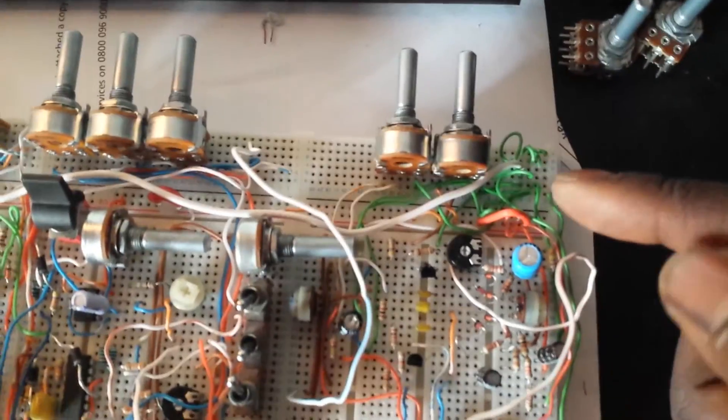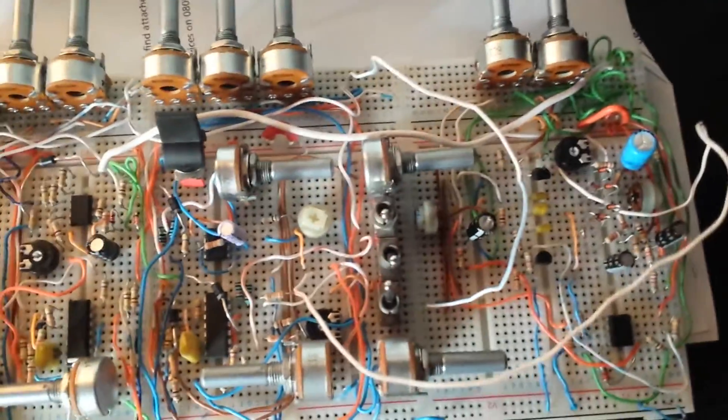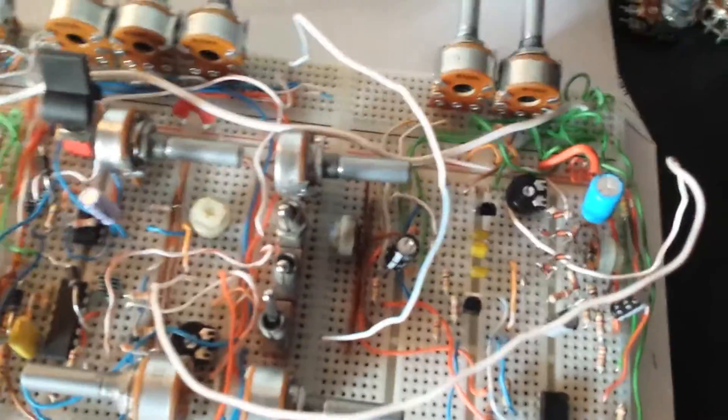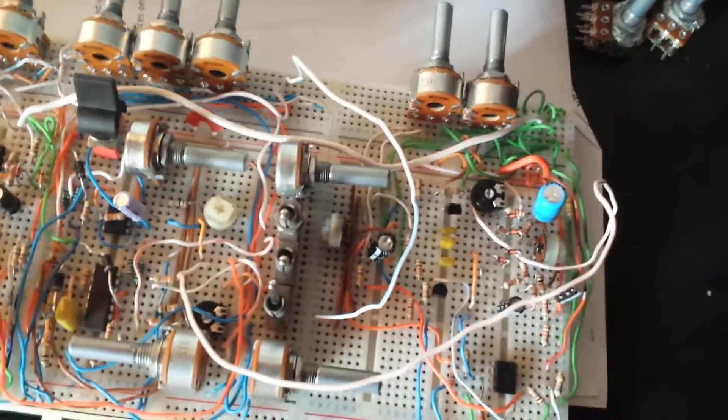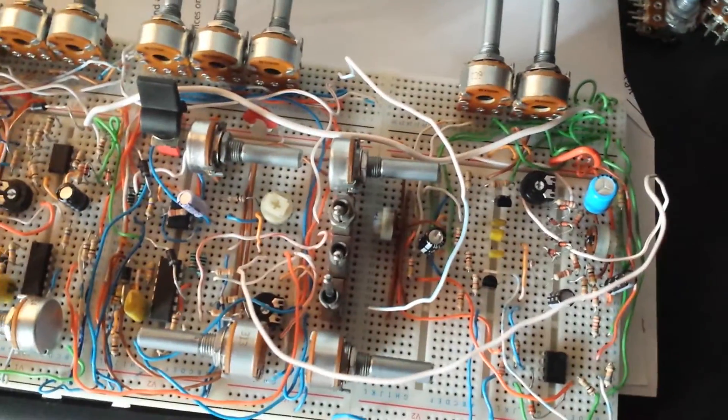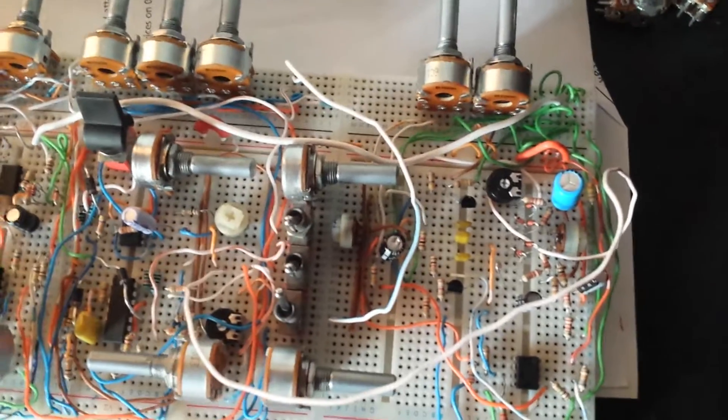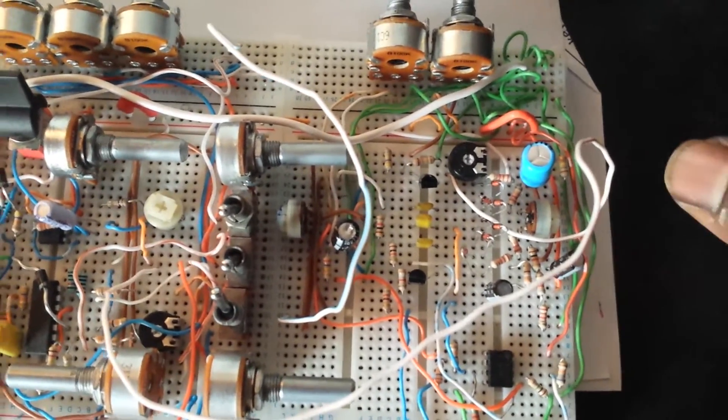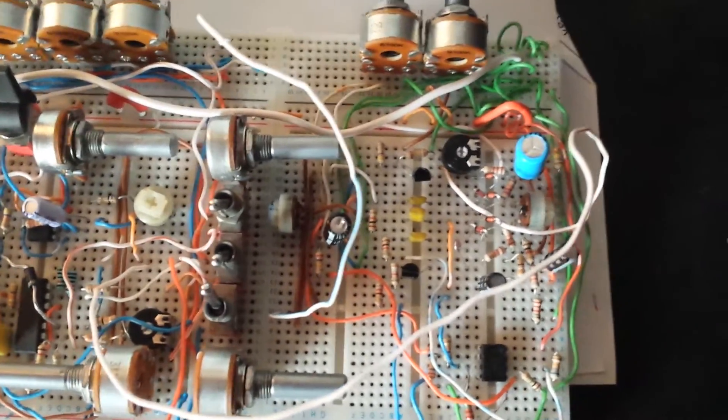Over here we have the filter which is a state variable low pass, band pass, high pass Steiner Parker clone. And this is just an 8 diode version and I'm not running a higher voltage to get that to work properly, and I just found it had a better response with the diode ladder I was using.